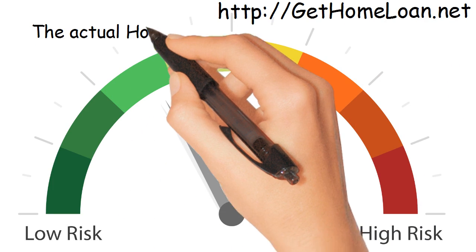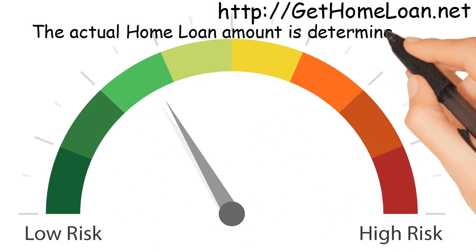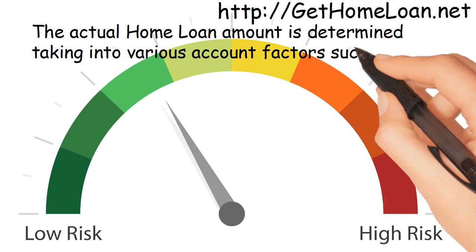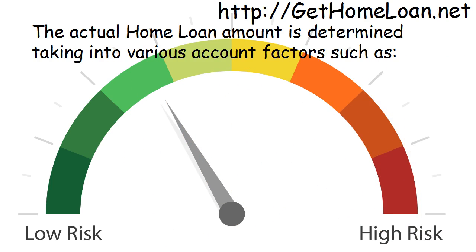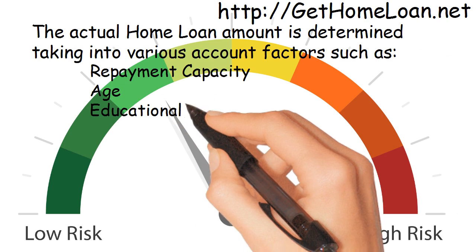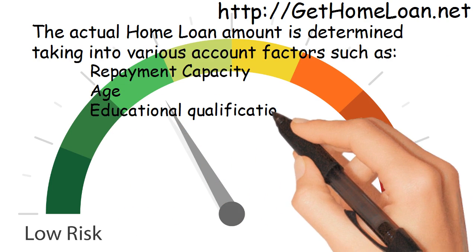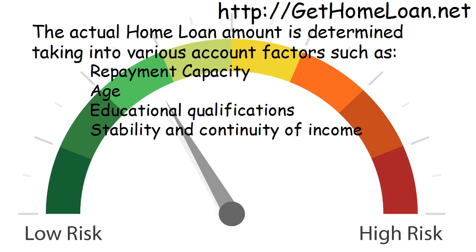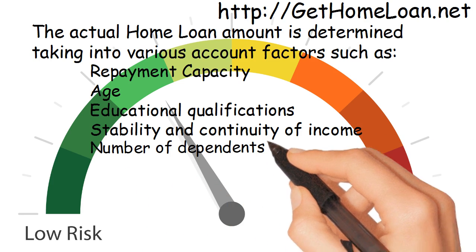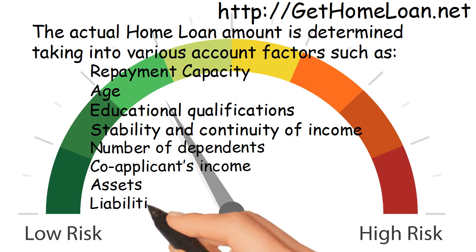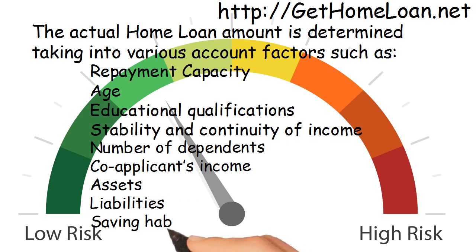The actual home loan amount is determined taking into account various factors such as repayment capacity, age, educational qualifications, stability and continuity of income, number of dependents, co-applicant's income, assets, liabilities, saving habits, and more.